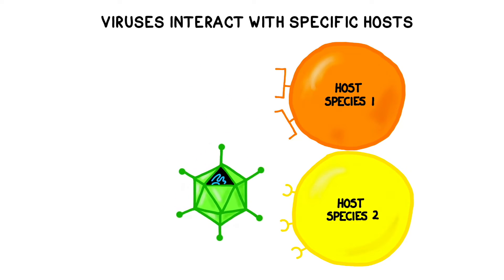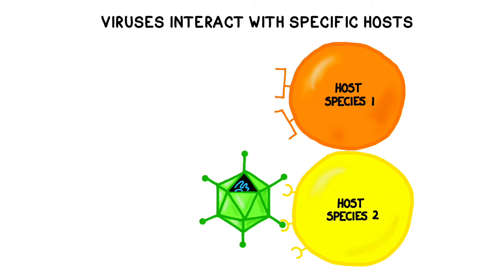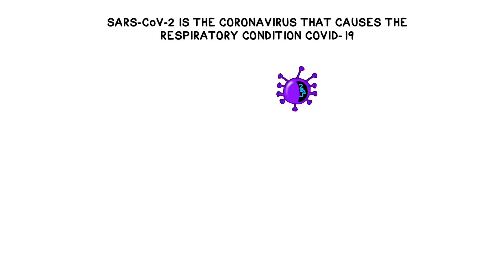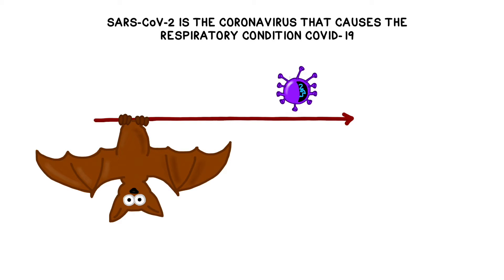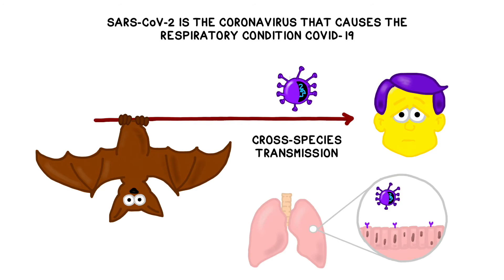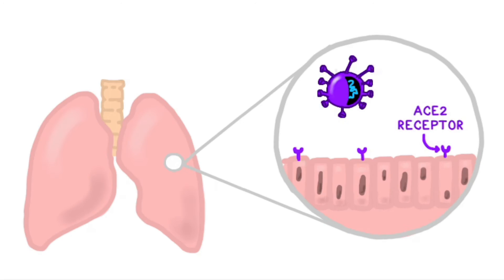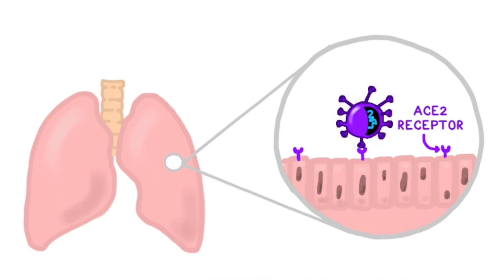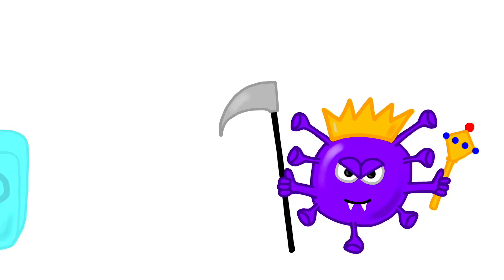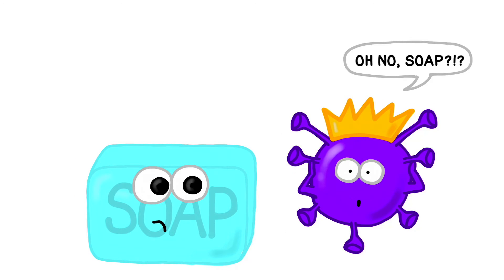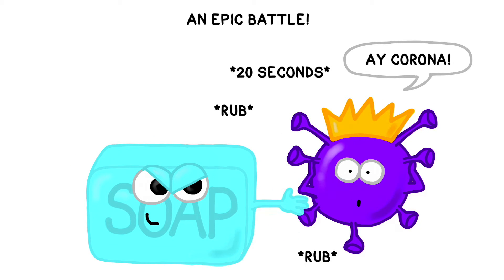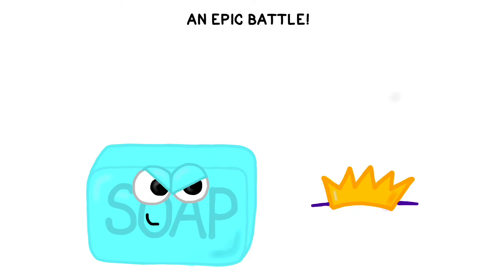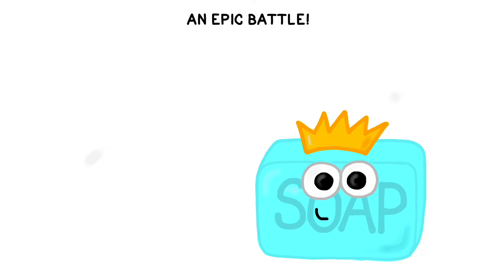Some viruses are so specific that they can only infect a single species, but others are capable of jumping between species. As of mid-March 2020, scientists believe that SARS-CoV-2, which causes the respiratory condition known as COVID-19, has somehow jumped from bats to humans. We believe the virus was able to do this because bats and humans have similar receptor proteins on the surface of our lung cells. In humans, the virus appears to attach to the ACE2 receptor, which is usually involved in regulating blood pressure. Please practice social distancing and wash your hands well with soap and warm water for at least 20 seconds. Coronaviruses are surrounded by a delicate lipid membrane that soap destroys.